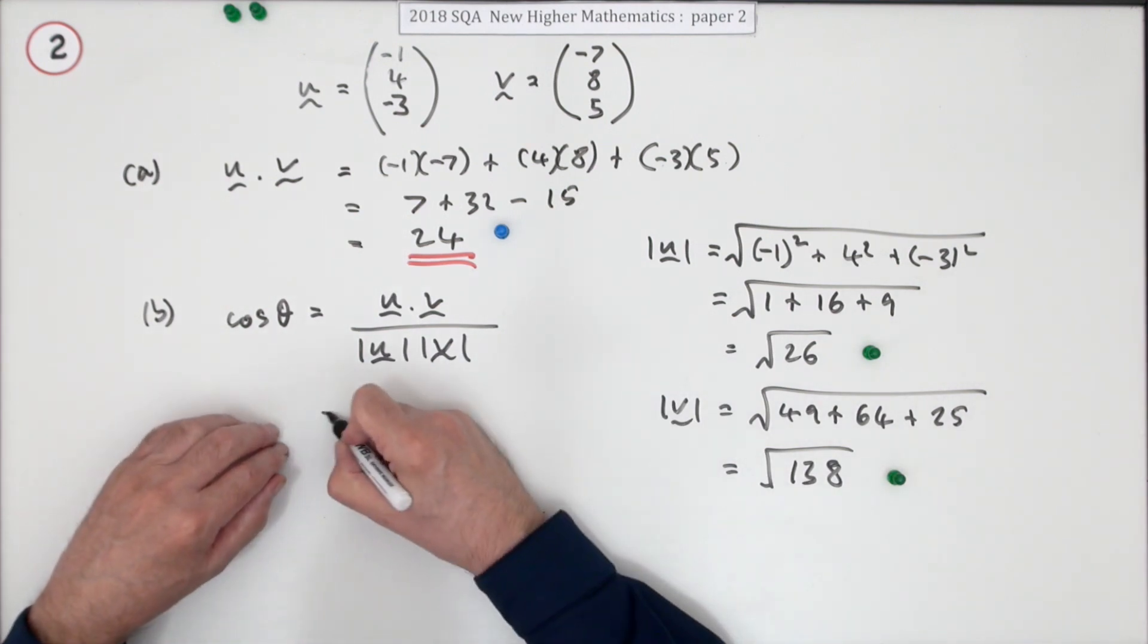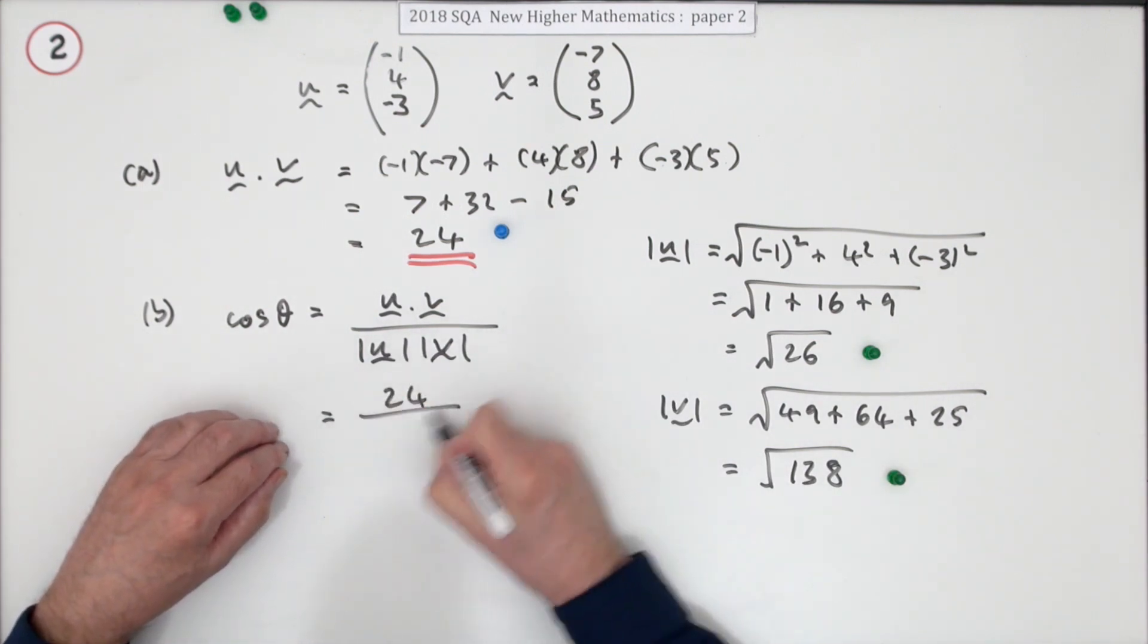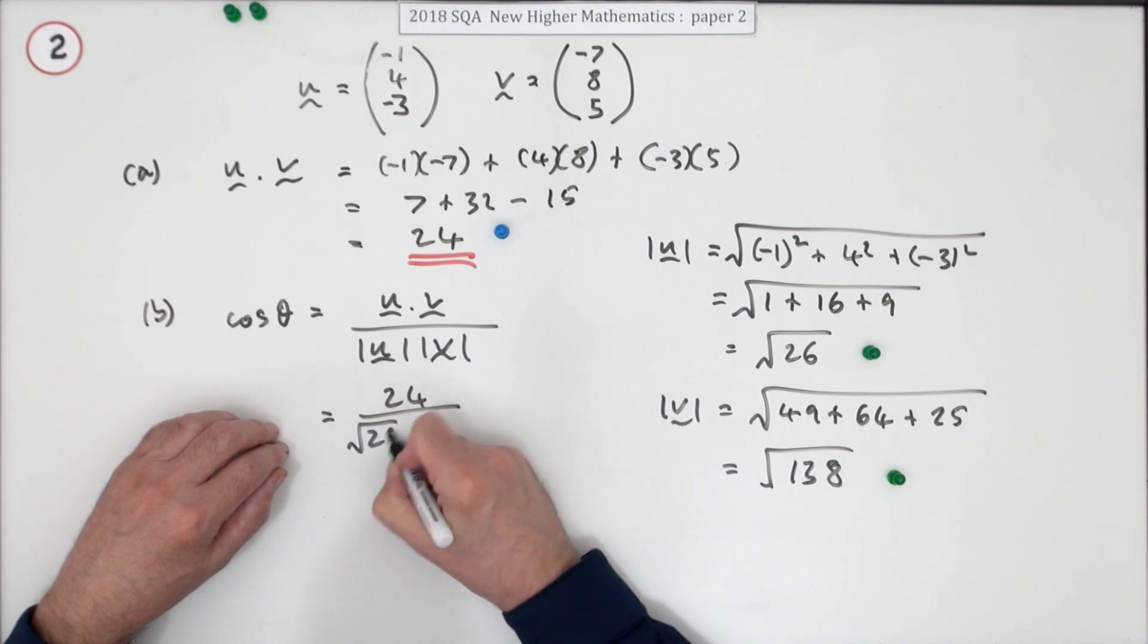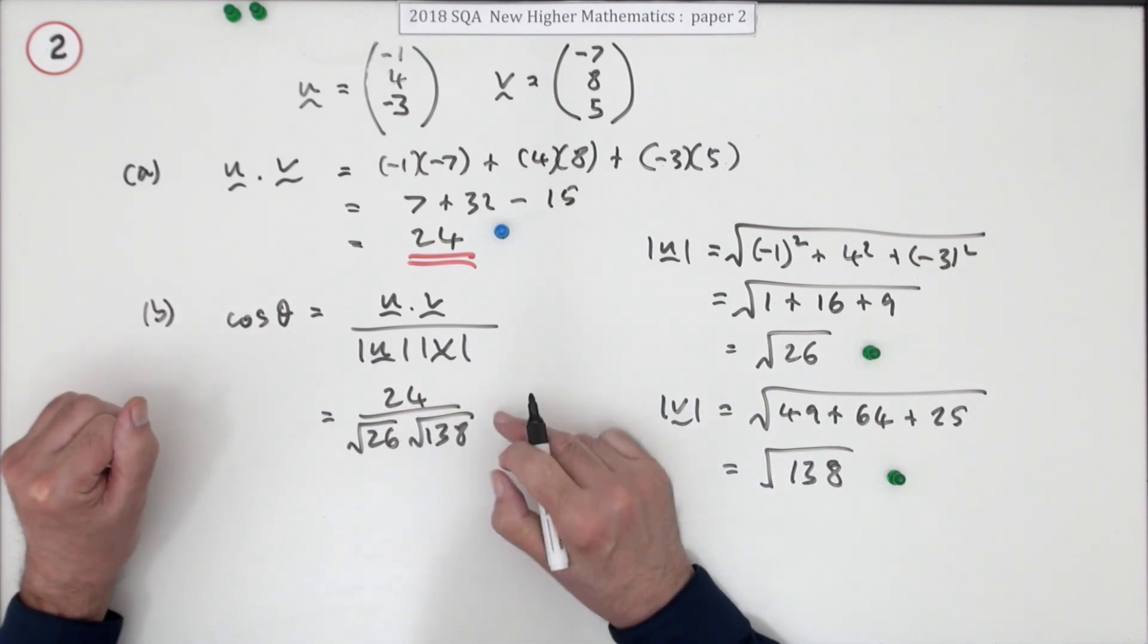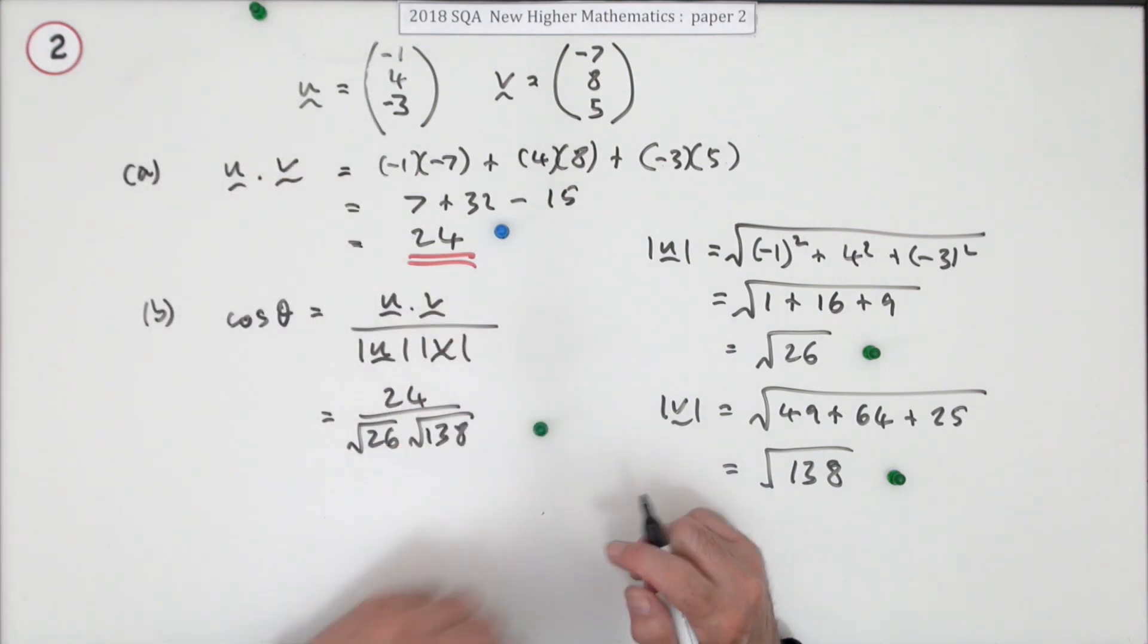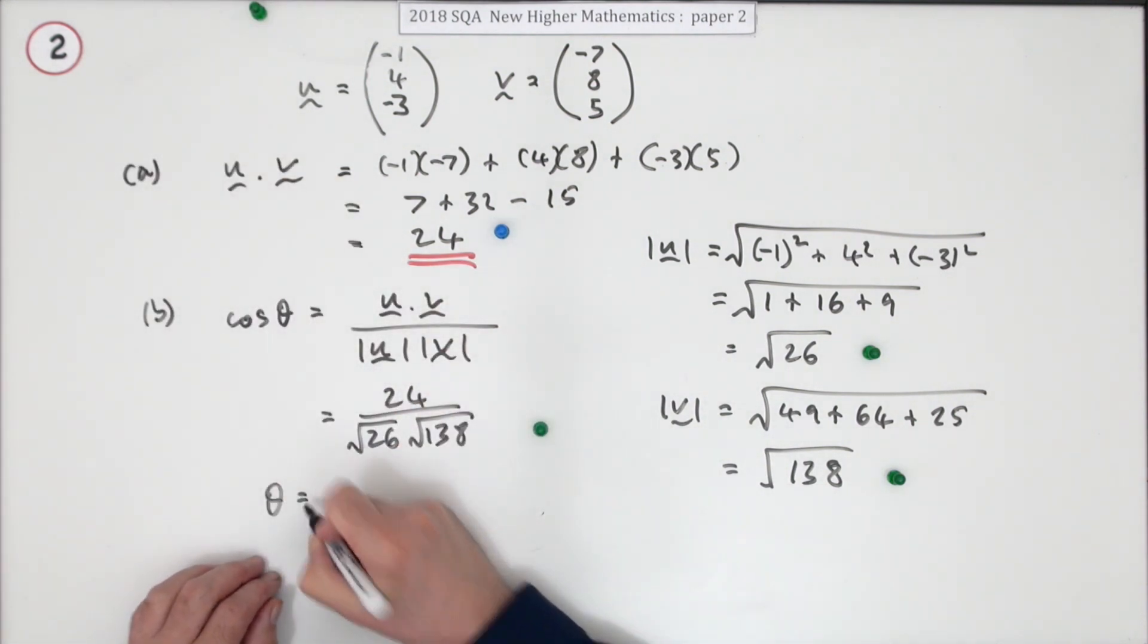So that means you've got 24 over the square root of 26 times the square root of 138. That gets a mark.